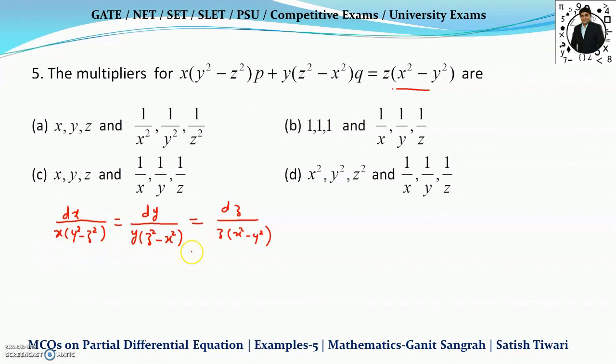So if you observe here, this auxiliary equation, if I divide this by x, this by y, this by z, and if I add it, this will become zero. So I can write down here each ratio will be equated to 1 by x dx, 1 by y dy, and 1 by z dz.